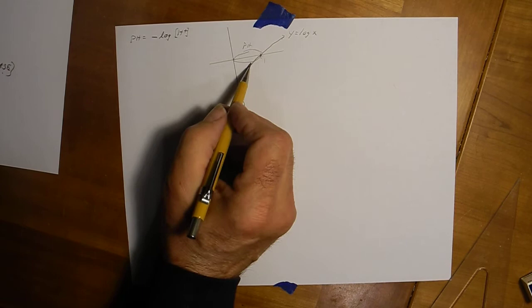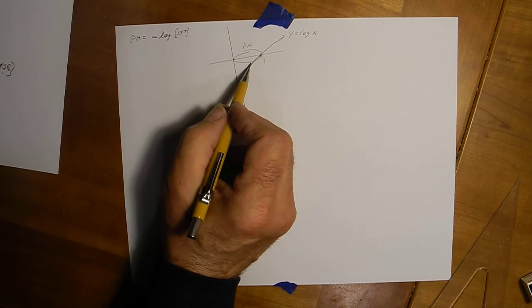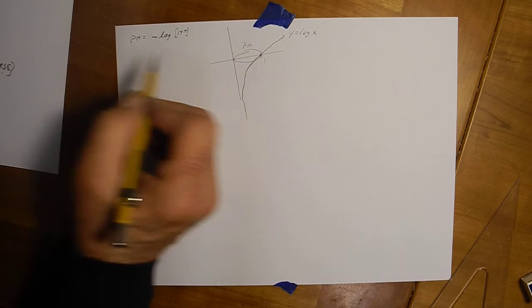So our pH's are going to be in here. Notice these are negative numbers. That's why you times by negative 1 to make it positive.